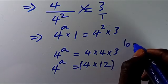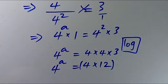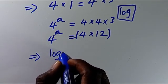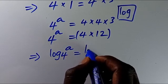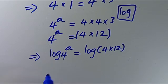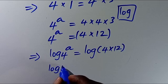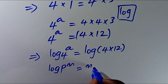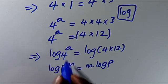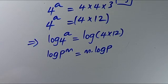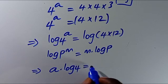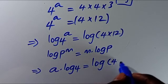So let's introduce log to both sides to get the possible value of a. We are going to have log of 4 to the power of a equals log of open parentheses 4 times 12. Recall that when we have log p to the power of m, the power m comes down to be m multiplied by log p. Here our p equals 4 and our m equals a, so we have a multiplied by log 4 equals log of 4 times 12.